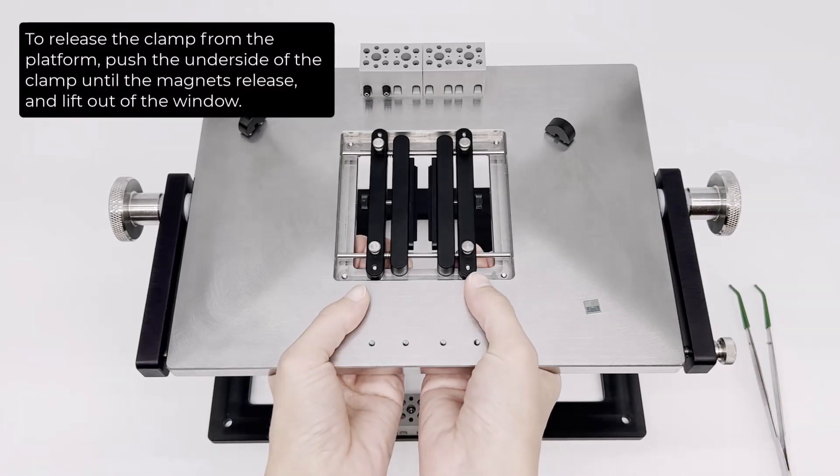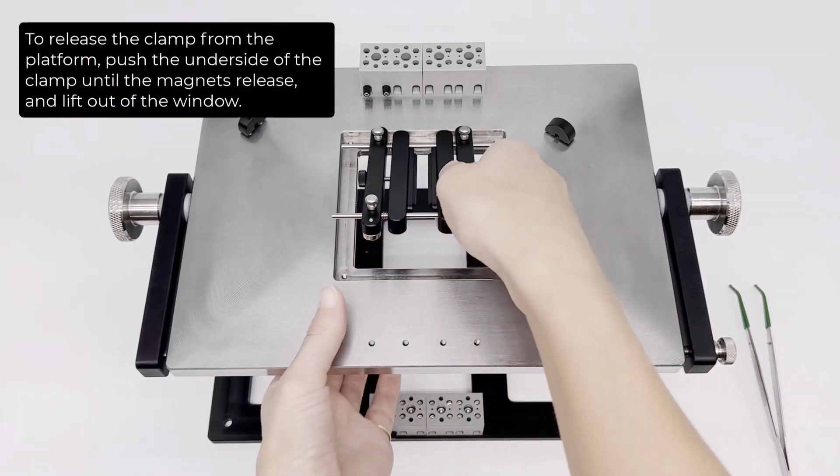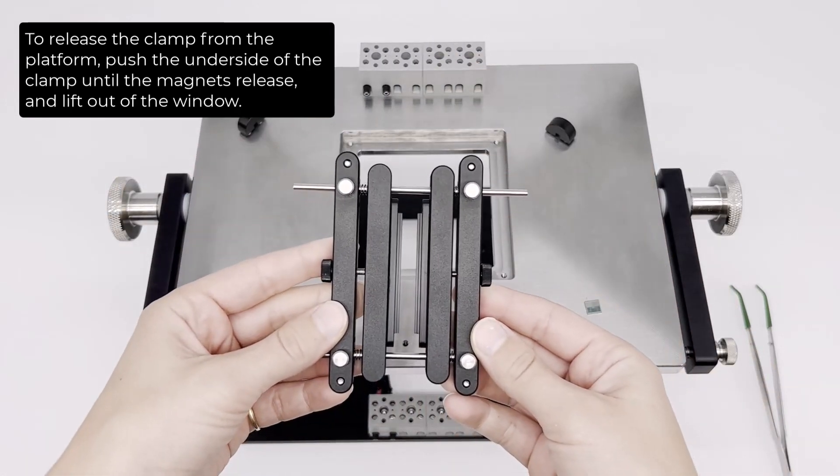To release the clamp from the platform, push the underside of the clamp until the magnets release and lift out of the window.